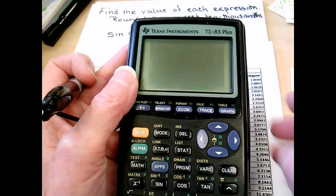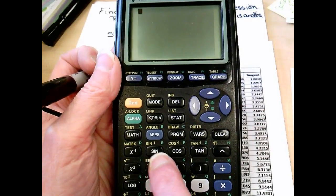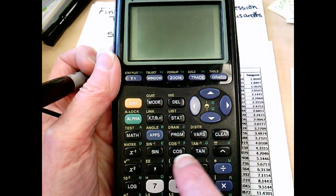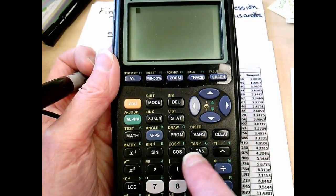And we want sine of 42, so down here, across, above all our numbers, are sine, cosine, and tangent.